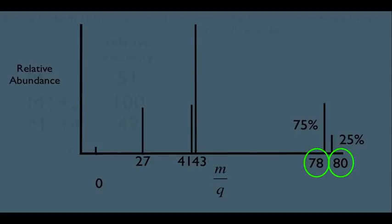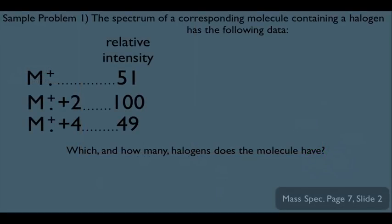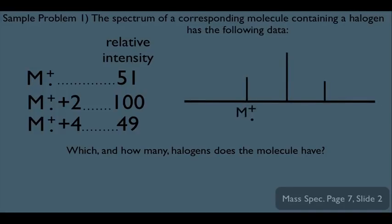Let's put our knowledge to work with a sample problem. The spectrum of a molecule containing a halogen has the following data: an M molecular ion peak with relative intensity of 51, an M-plus-2 peak at roughly 100%, and an M-plus-4 peak at about 49. We need to determine which halogen and how many. Looking at the picture: the M peak at 51% and the M-plus-4 peak at 49% are roughly equal, each about half the M-plus-2 peak.